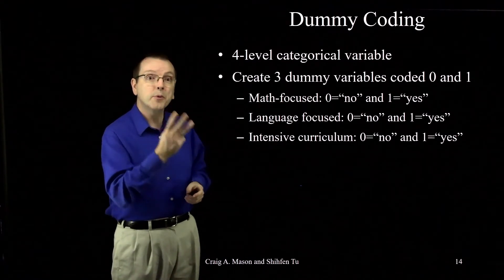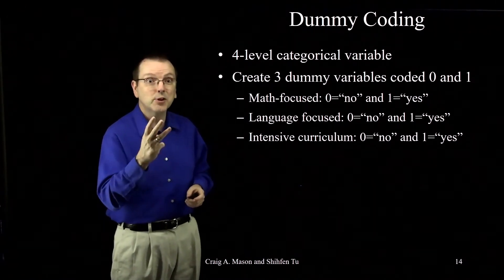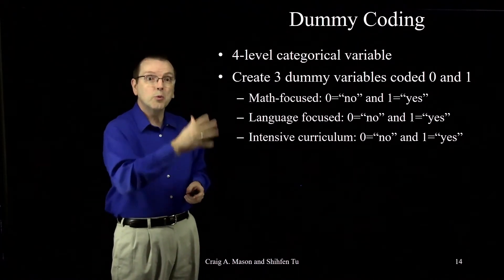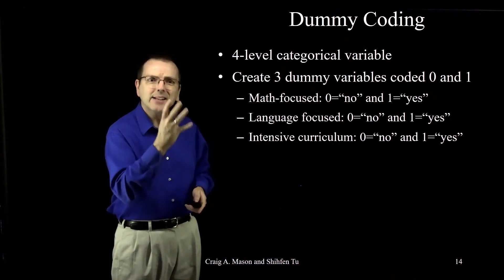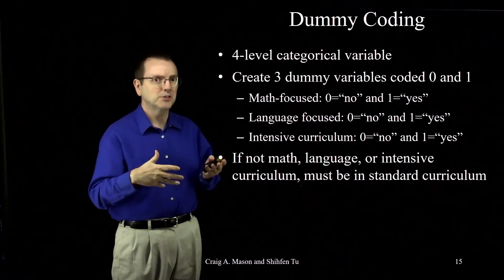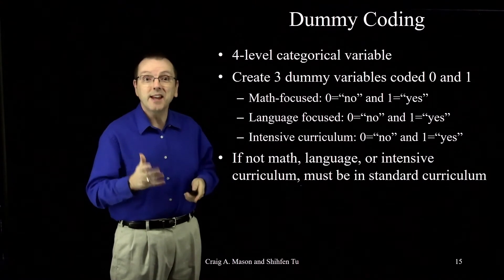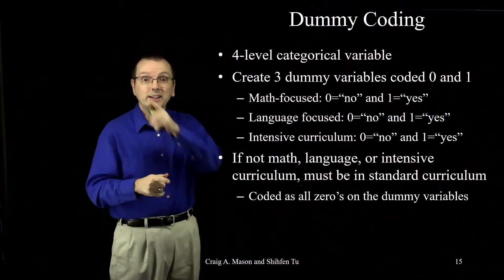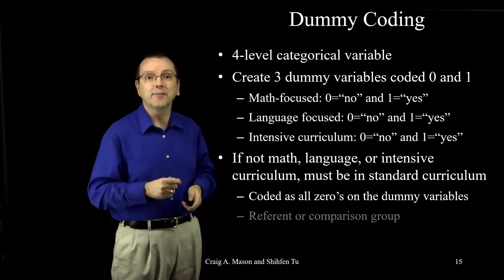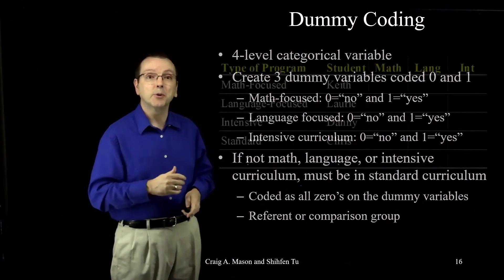Every child is going to have three variables indicating am I in the math-focused program, am I in the language-focused program, and am I in the intensive curriculum? Notice, just like we saw when we used one dummy variable to code two groups, we're using three dummy variables to code four groups. That last group doesn't need a dummy variable. If you're not in the math-focused curriculum and you're not in the language-focused curriculum and you're not in the intensive curriculum, what's left? You must be in the standard curriculum. Students in the standard curriculum are identified by the fact that they are all zeros in all of the three other dummy variables. In that sense, a fourth dummy variable would be redundant. And as we'll see later, this all-zeros group will be our referent or comparison group.